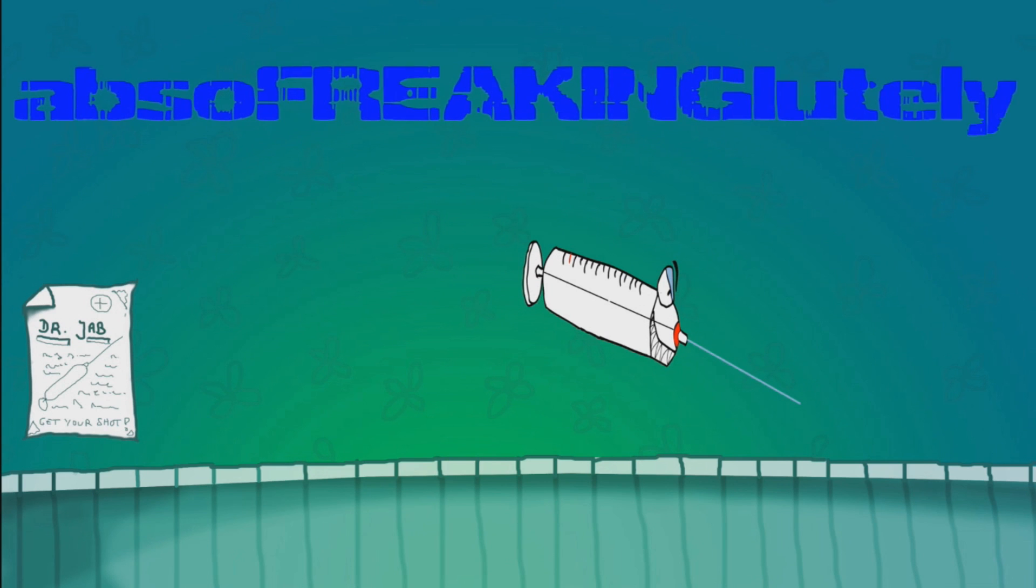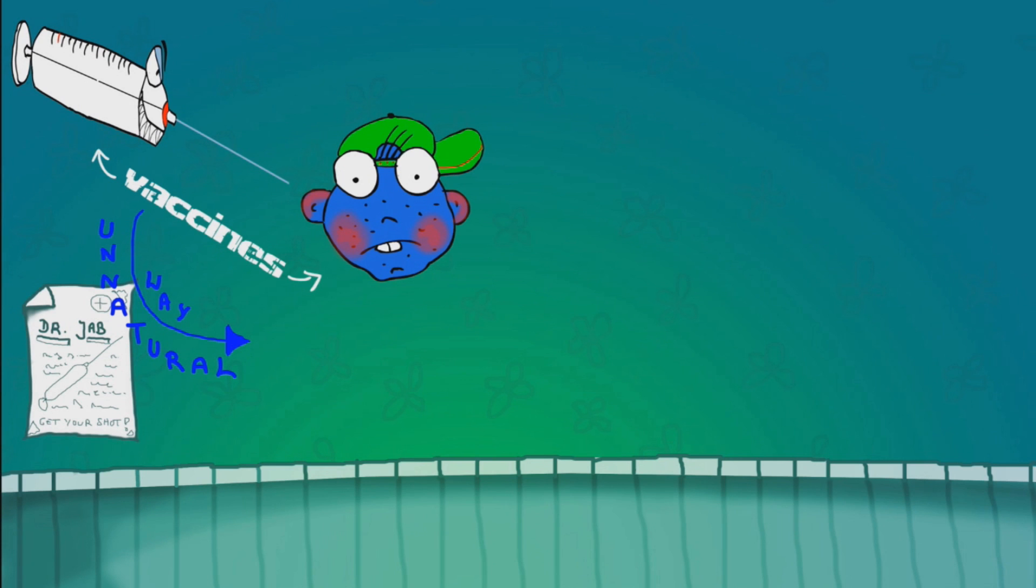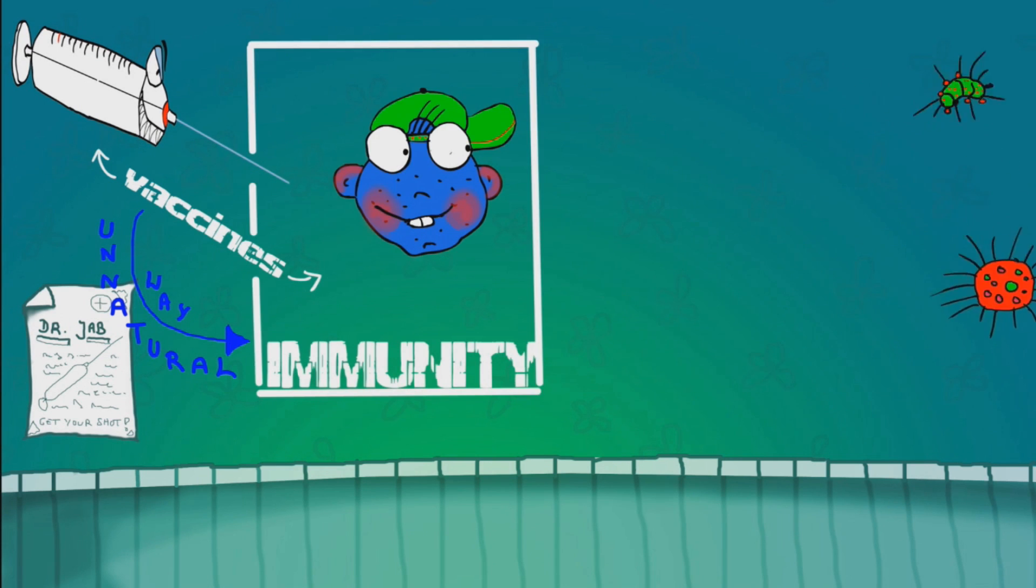Abso-freaking-lutely! Most, if not all, shots that are given to kids are vaccines. Vaccines are the unnatural way of giving us immunity against many horrific viruses or bacteria that cause tons of human diseases.